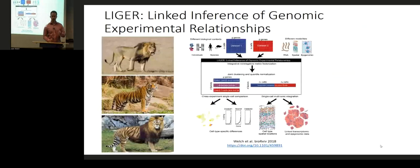Last year during my postdoc with Evan, and continuing into this year, we developed an approach called LIGER — Linked Inference of Genomic Experimental Relationships. The name came from a liger, which is what you get if you breed a lion and a tiger — a metaphor for blending different kinds of data together. We released a preprint on bioRxiv last fall, and just within the last couple of weeks the paper was accepted by Cell. This is our graphical abstract from the Cell paper.